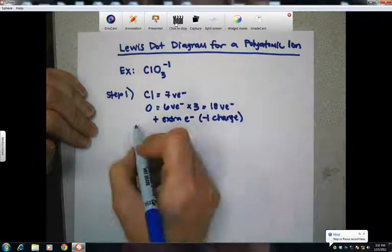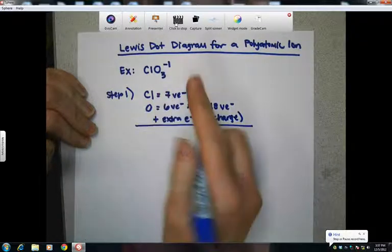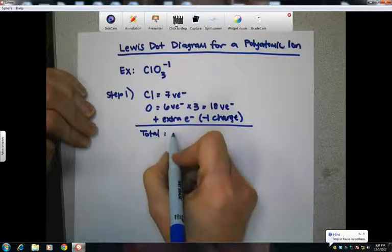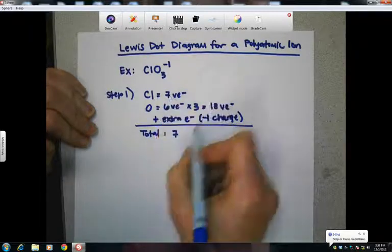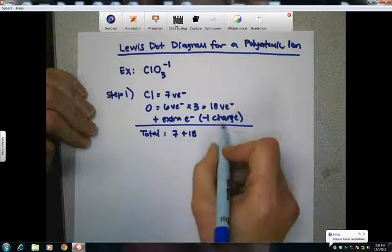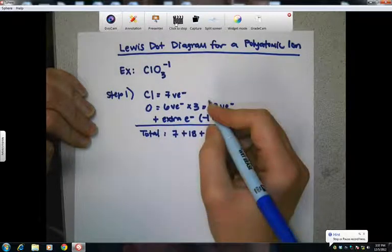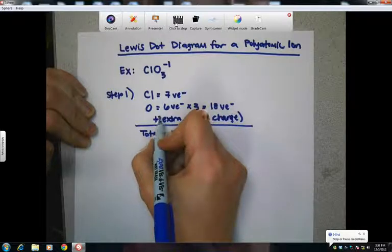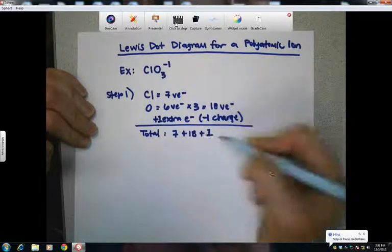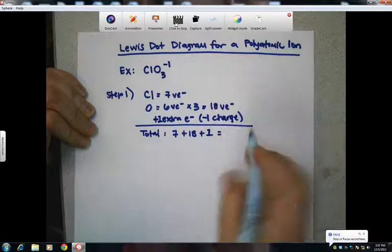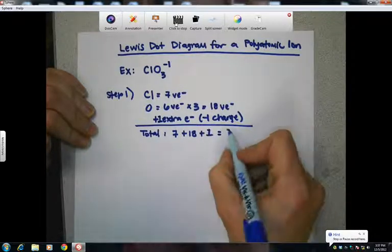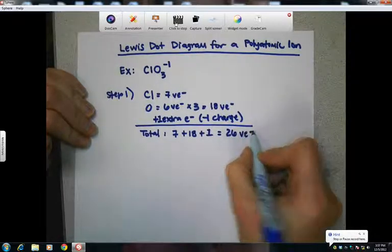So, if we add it up, we've got seven, so our total is seven plus 18 plus that one from our negative one charge. So we're adding plus one extra electron. So we're going to add that one electron to our total. What we end up with is 26 valence electrons total.